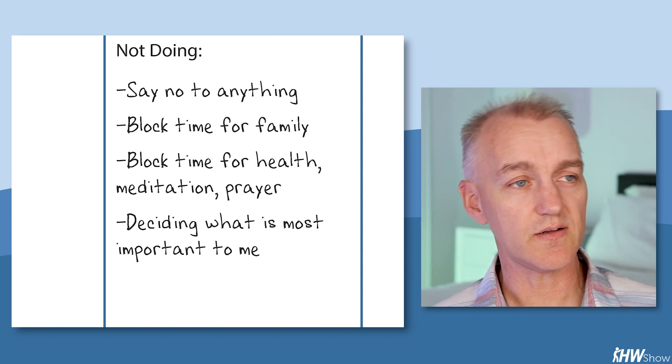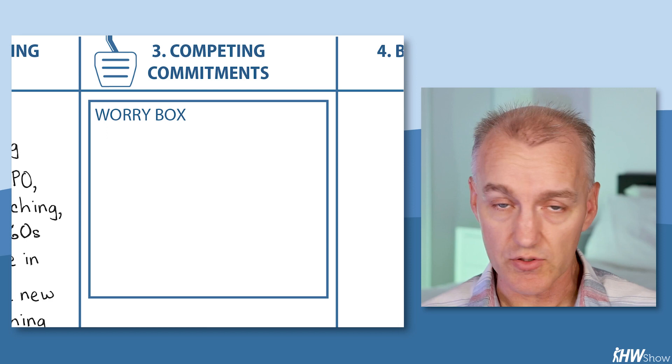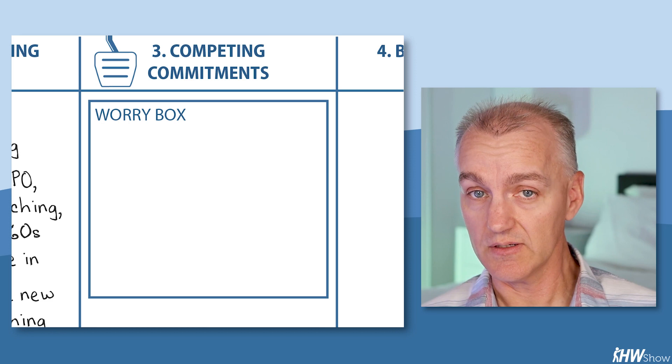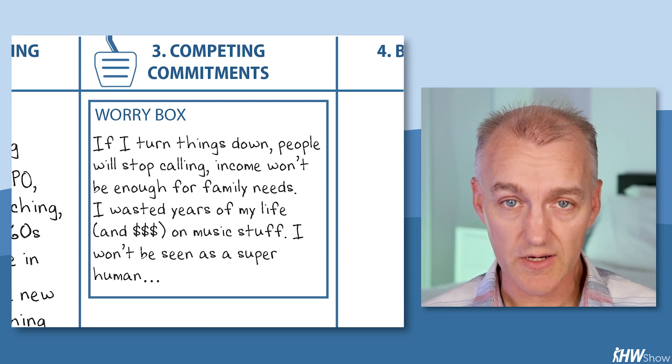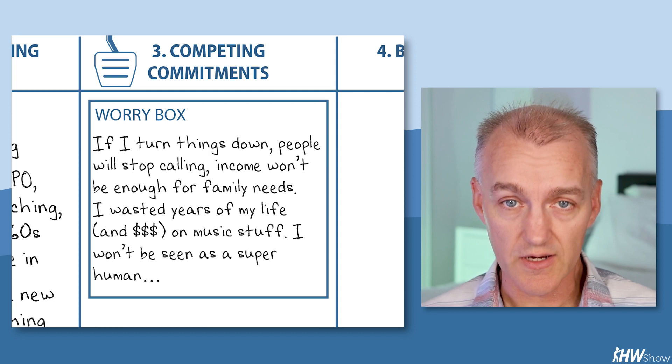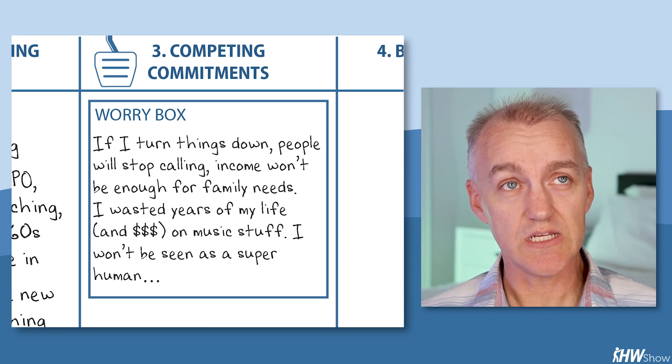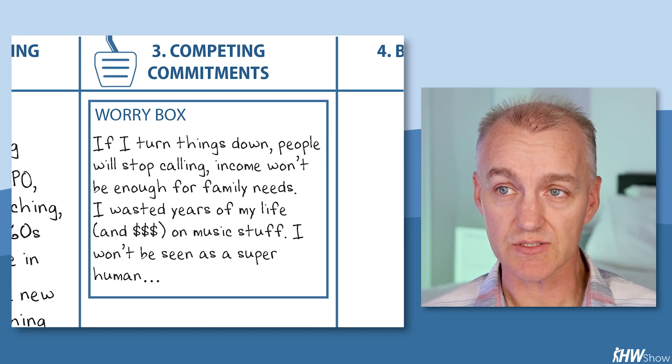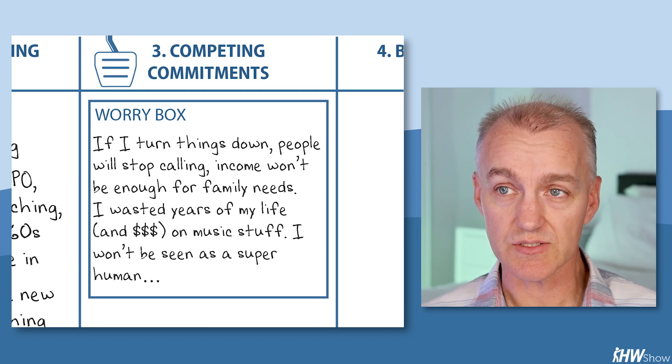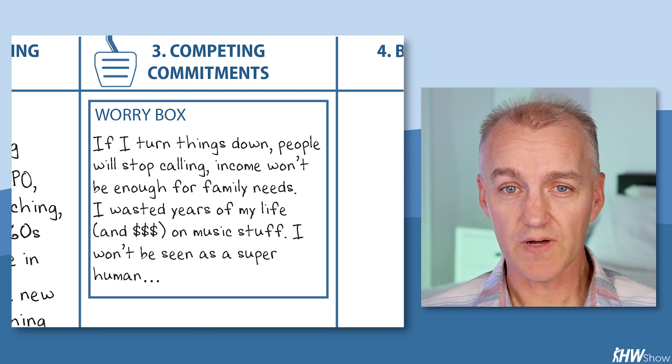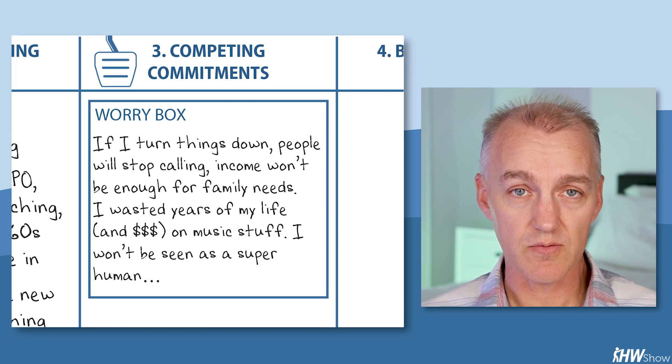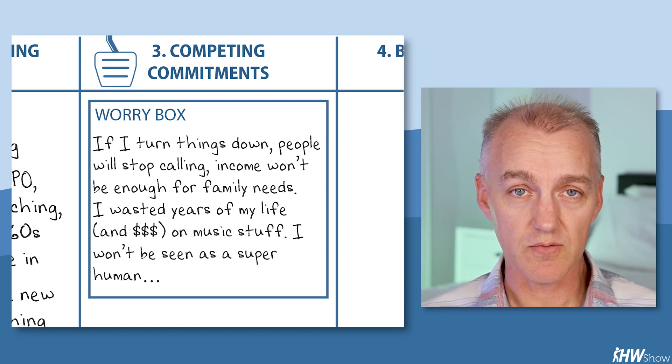Now, moving on to column three, the foot on the brake here, the worry box. What was I freaked out about? And as I thought deeply about this, I realized that my fear, if I stopped doing everything in column two that I was doing and started doing everything I was not doing, was if I turn things down, people are going to stop calling me. My income is not going to be enough for my family needs. I'm going to feel that childhood feeling of scarcity again. And there was a little bit of that that was like I had wasted years of my life focusing on music stuff. And if I started turning down gigs to take on really what was my career in coaching and training, if I turned down the music stuff, then that means I wasted a lot of years on music. And finally, I had always had this sort of identity of being able to do it all. And what I wrote down in my worry box was, I won't be seen as a superhuman.